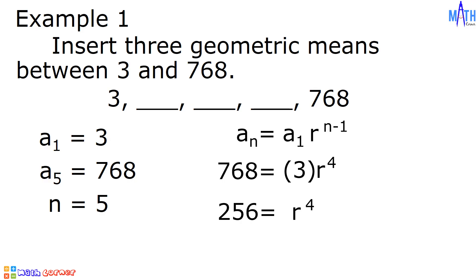3r raised to 4 divided by 3 is equal to r raised to 4. To solve for r, we need to extract the root. The 4th root of 256 is equal to positive and negative 4. The 4th root of r raised to 4 is equal to r. There are two values of r: positive and negative 4.